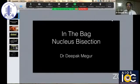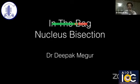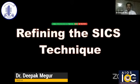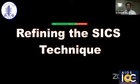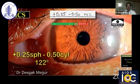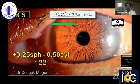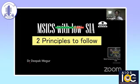I'll be speaking on the in-the-bag nucleus bisection techniques. We are always endeavoring to refine our SICS techniques because we should be obsessed with seeing good post-op refractive results. If we consistently achieve these results, the visual outcome would be almost comparable with phacoemulsification, giving patients six by six vision. Our aim is to have very low surgically induced astigmatism, and for that we need to follow two basic principles.